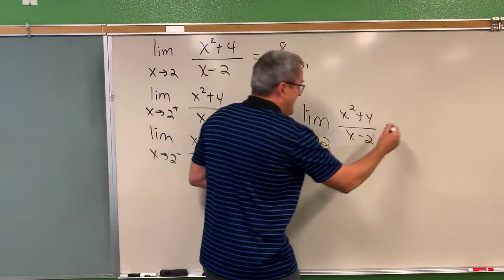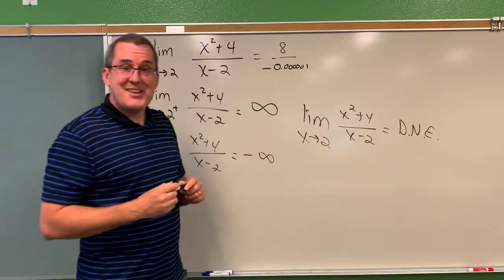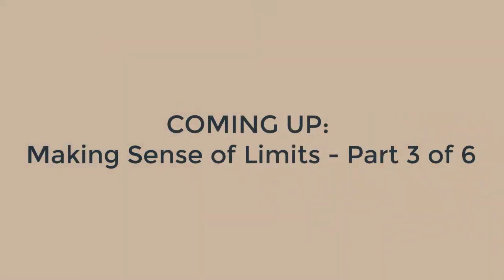And if we don't, we just say that this limit does not exist. I'm going to abbreviate that DNE, does not exist.